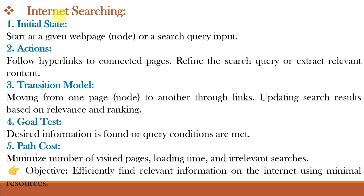The last example is internet searching, whose objective is to efficiently find relevant information on the internet using minimal resources. In recent years, there has been increased demand for software robots that perform internet searching, looking for answers to questions, related information, or shopping deals. The searching techniques consider the internet as a graph of nodes or pages connected by links, and the final goal is to find the desired information.